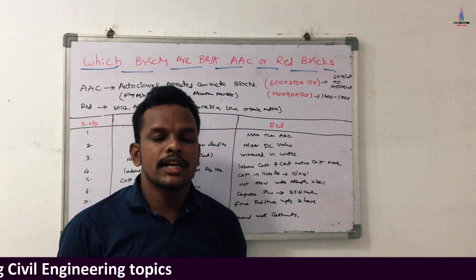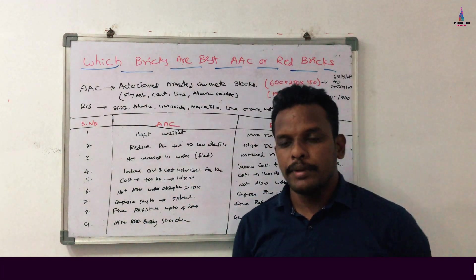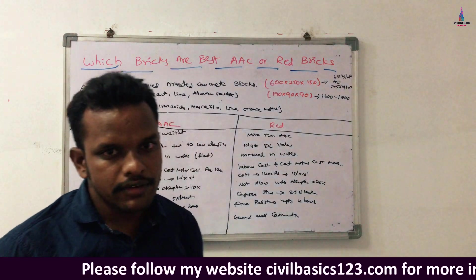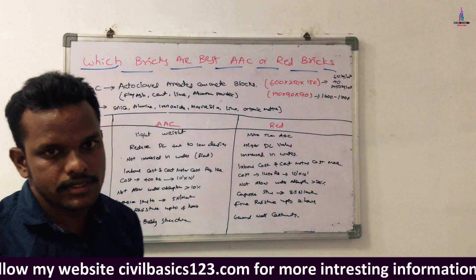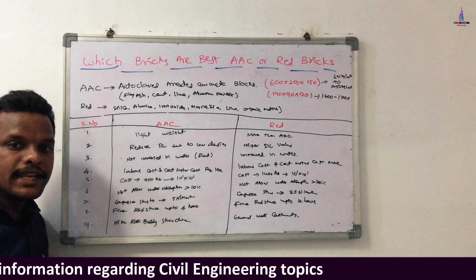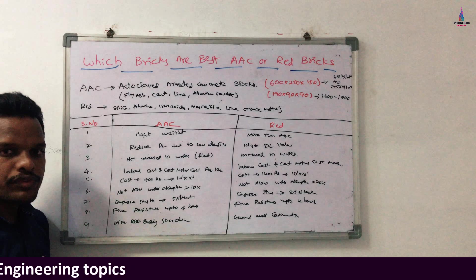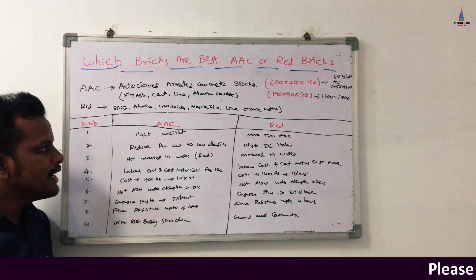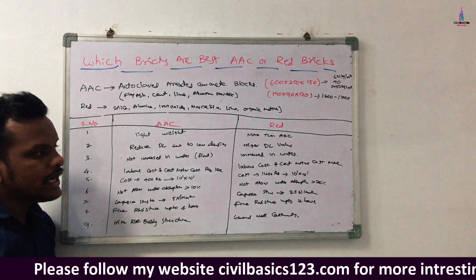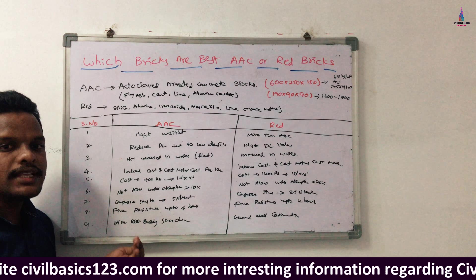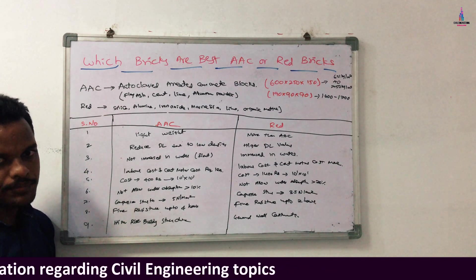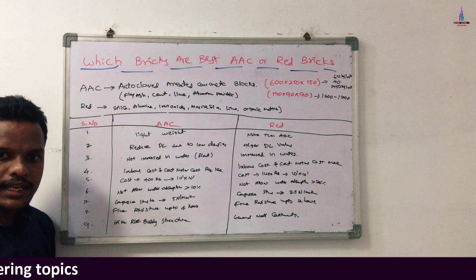Now I will explain the complete differences between AAC block brickwork construction and red brick block construction. The first difference is that AAC blocks are lightweight. Due to the low density of the 600 mm x 250 mm x 150 mm AAC block dimensions, less weight is developed. Red brick blocks are heavier than AAC blocks.